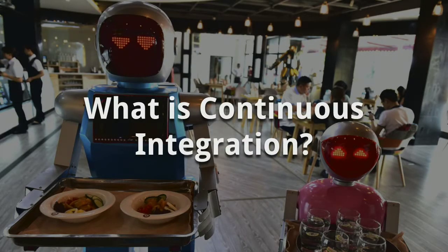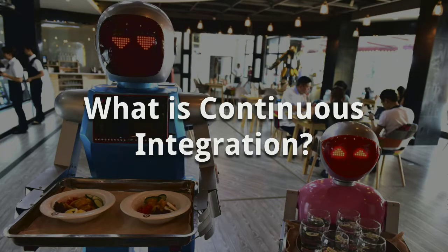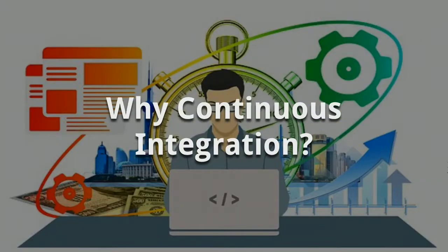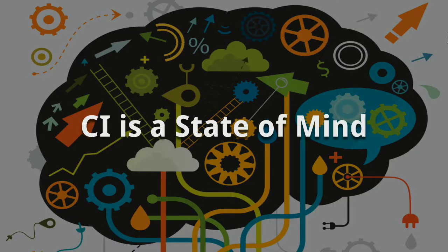I want to start with a high-level overview of what continuous integration is and talk about some misconceptions. Continuous integration to me is really just thinking about what pieces of your workflow you can automate — what you can take from doing manually and bundle into CI services that live on the cloud. It's really taking CI and not viewing it in that very narrow way.